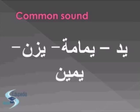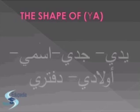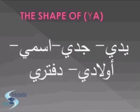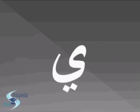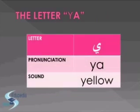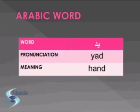YA is the last letter we are going to learn today and it is the last letter in the Arabic alphabet. Look at these words and find out the shape of the letter YA. Here is the letter YA and its sound is as 'ya' in the word 'yellow.'